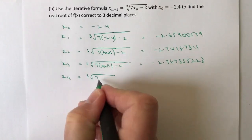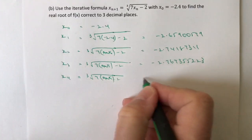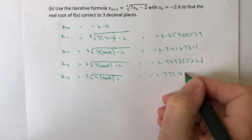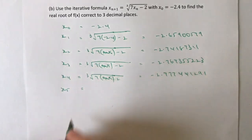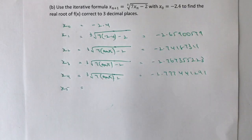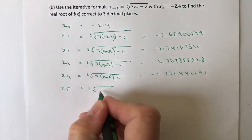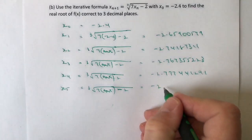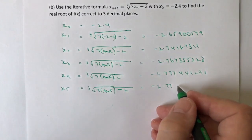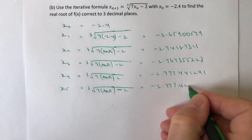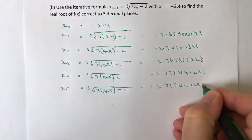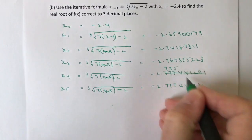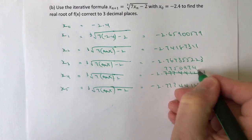So x₄: cube root of 7 times answer minus 2 gives minus 2.777509748. Wait — I've just realised that's incorrect. x₄ is actually minus 2.77750974 — sorry about that. And x₅: cube root of 7 times answer minus 2 gives minus 2.777441291.